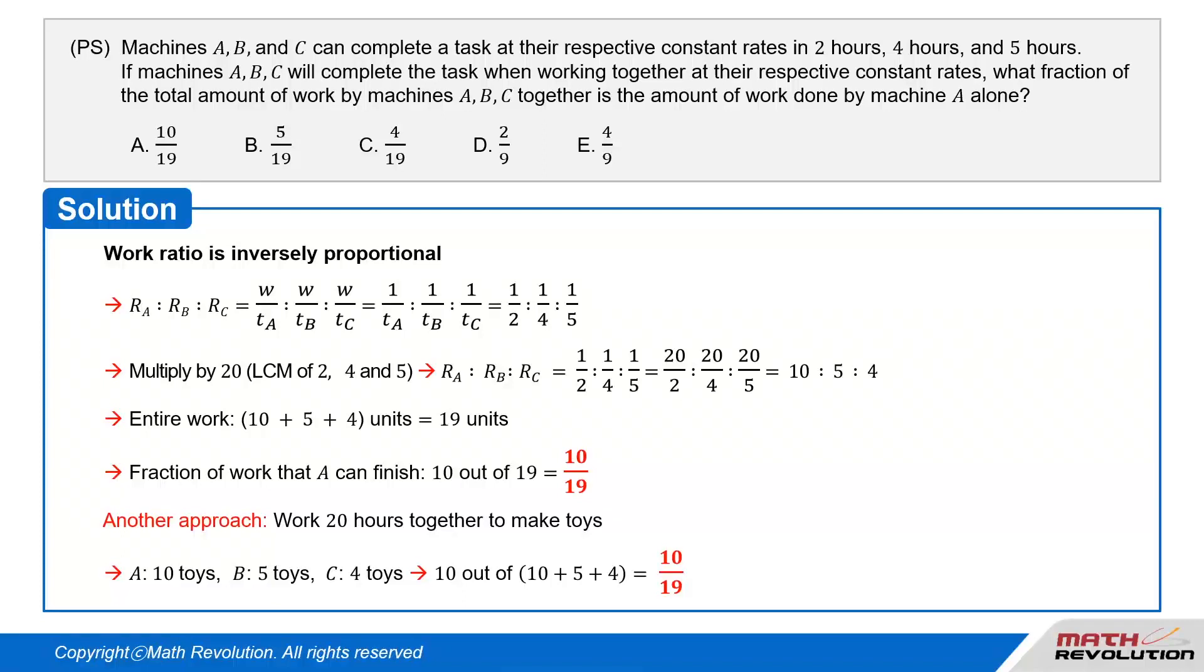Let me show you another approach to solve this question. Assuming that A makes 1 toy in 2 hours, B makes 1 toy in 4 hours, C makes 1 toy in 5 hours, then we can also assume that 3 machines working together for 20 hours, which is the least common multiple of 2, 4, and 5.